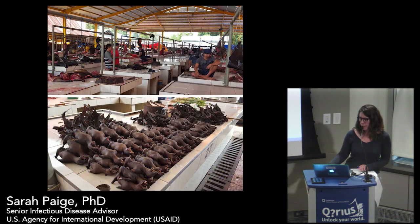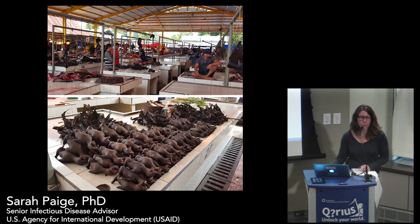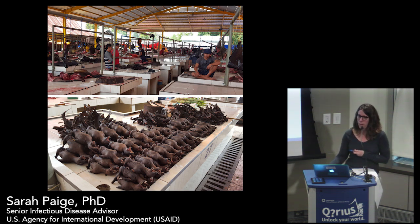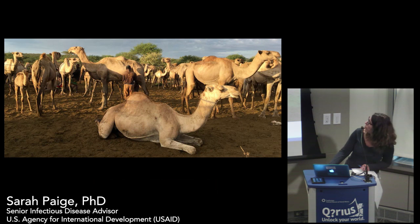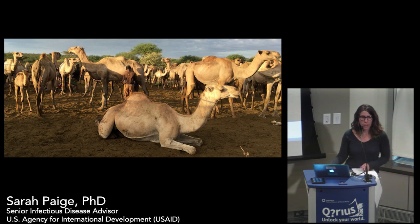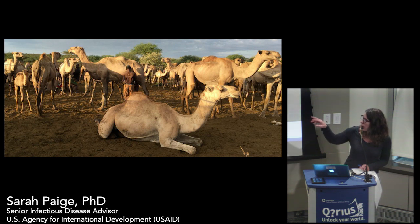There's a picture of a market with what we call bushmeat, which I'd like to just call meat. The term bushmeat is loaded with judgment — we wouldn't call venison bushmeat, so why do we call rodents bushmeat in Africa? And there's a picture of camels in northern Kenya where PREDICT works. MERS is associated with camels, and here's just a caretaker living side by side with camels.